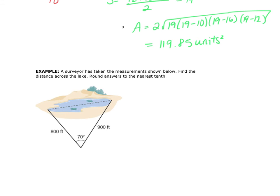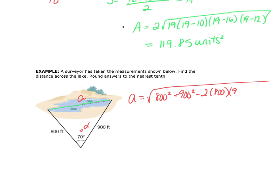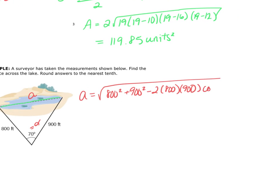A surveyor has taken the measurements shown — find the distance across the lake. They're not asking for the area; they're asking for this distance. I'm going to use the Law of Cosines and call that distance A. So A equals the square root of 800 squared plus 900 squared minus 2 times 800 times 900 times the cosine of 70 degrees. The length across the lake is equal to 978.51 feet, or rounding to the nearest tenth, 978.5 feet.